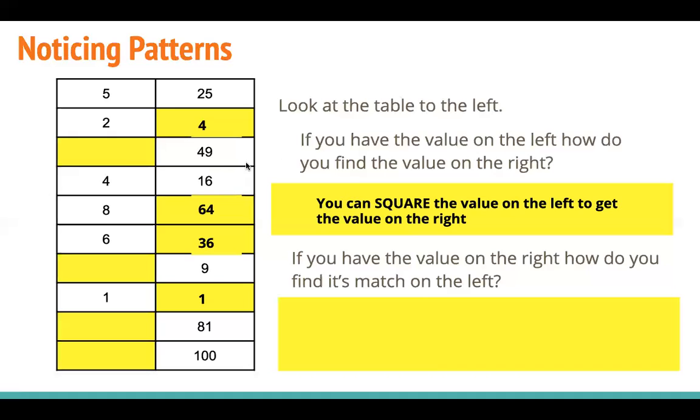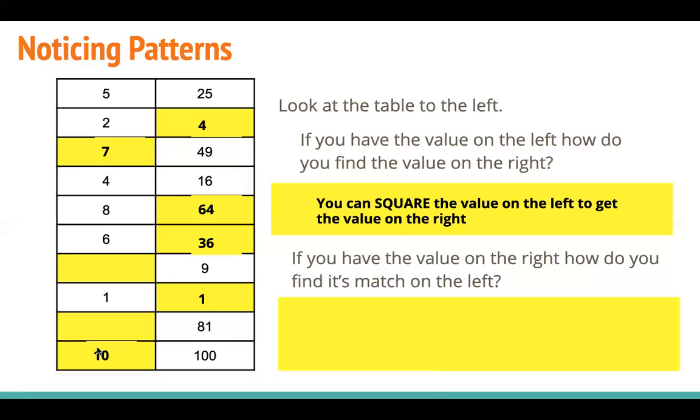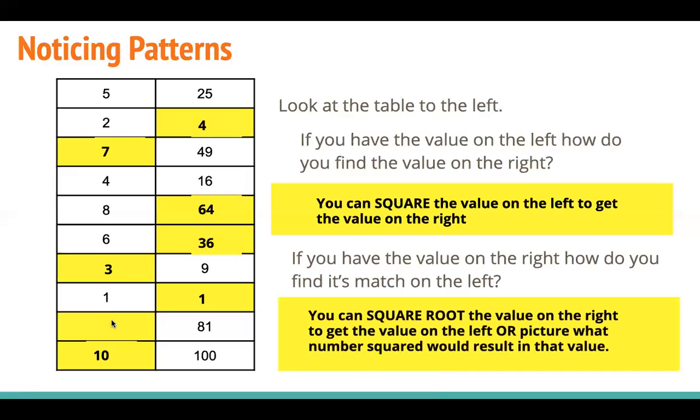Now let's go the other direction. So if I'm looking for the relationship from the right to get the other way, what can I do? Let's look at a few examples. For 49 I get 7, for 100 on the right I get 10 on the left, and for 9 I would get 3. And just so you know, you can square root that value on the right to get the value on the left.